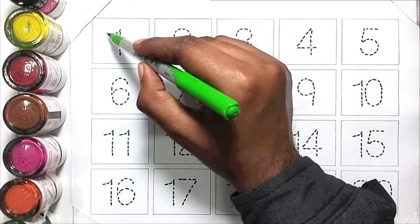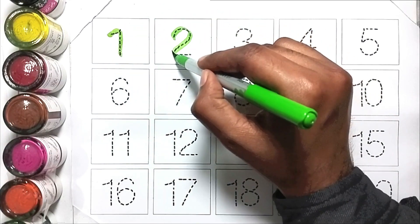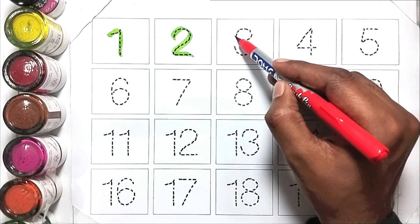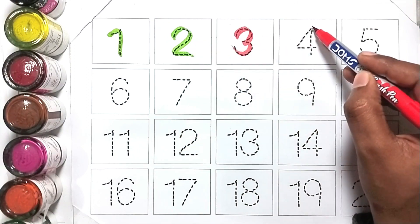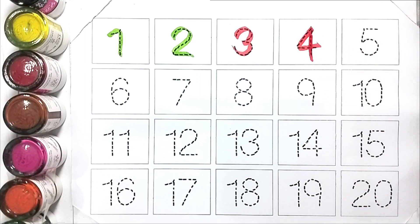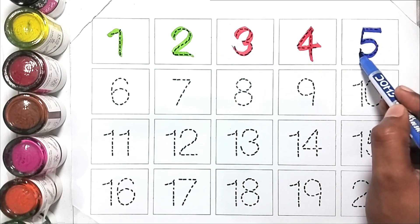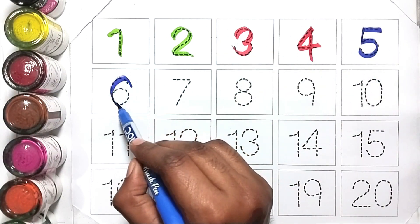One, two - red color. Three, four - blue color. Five, six.